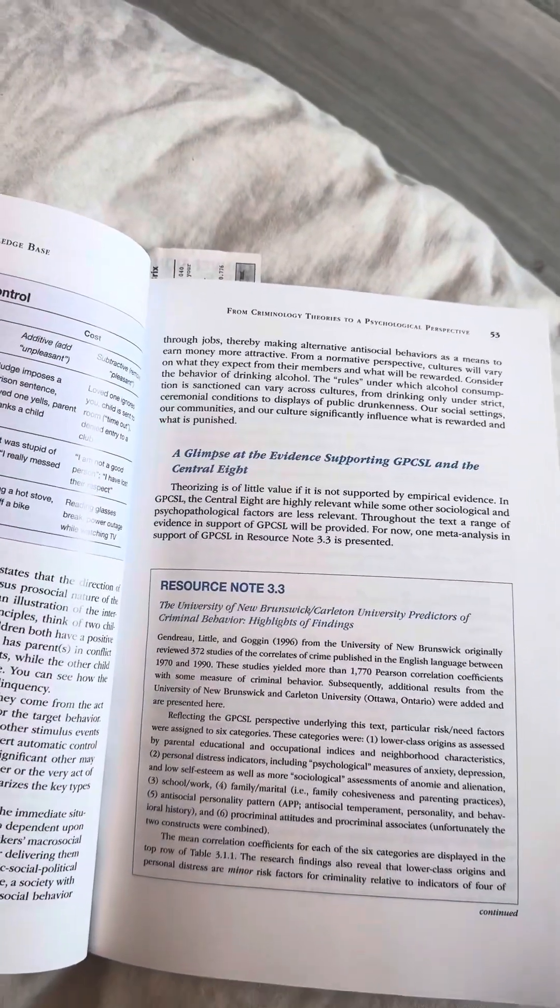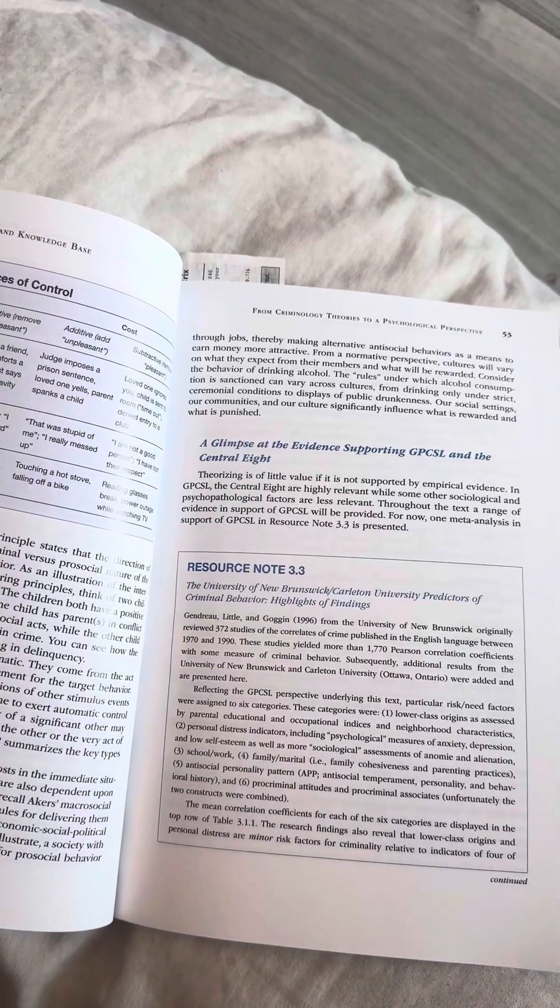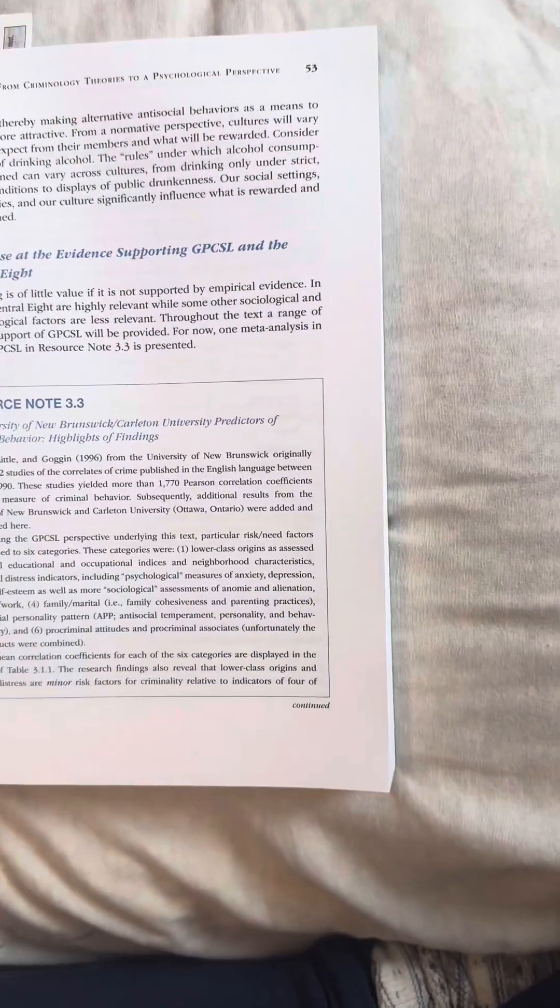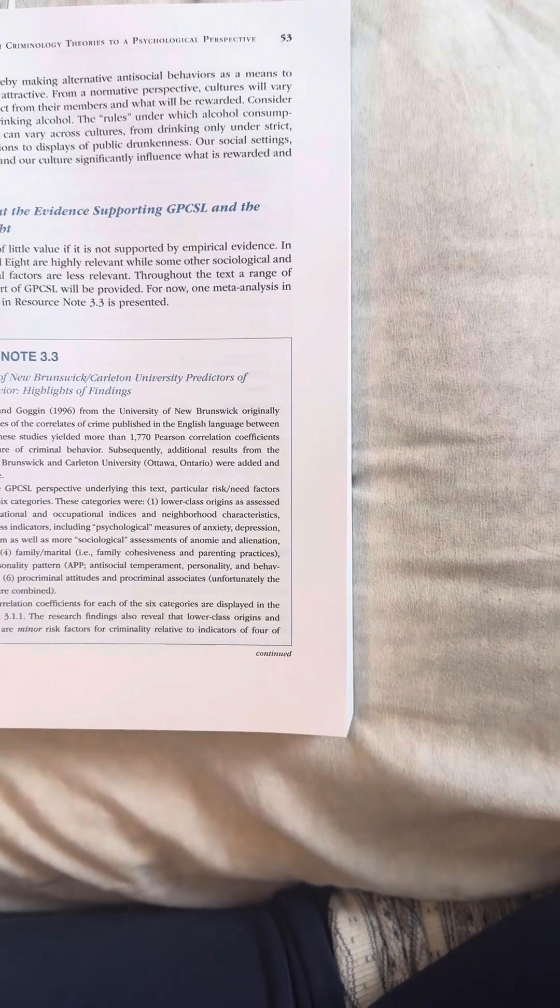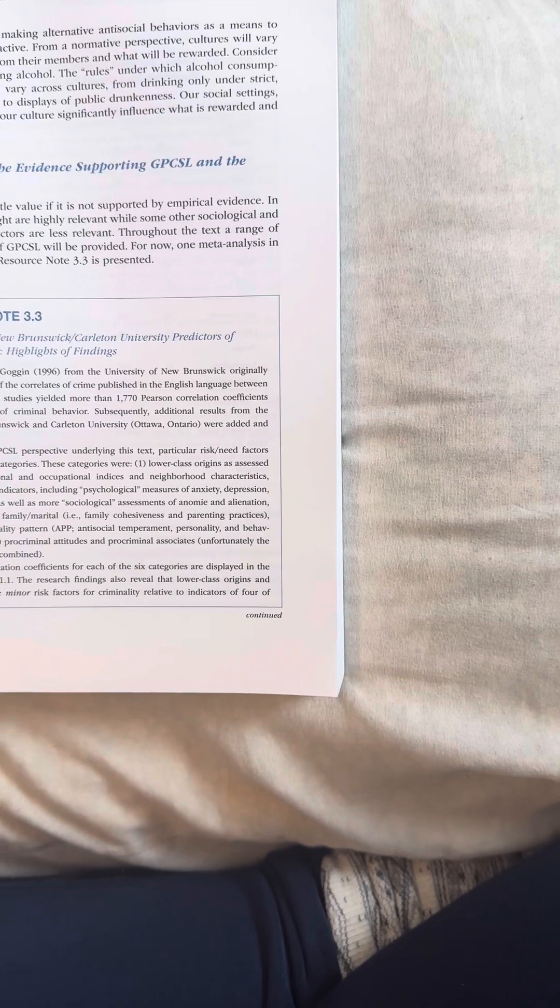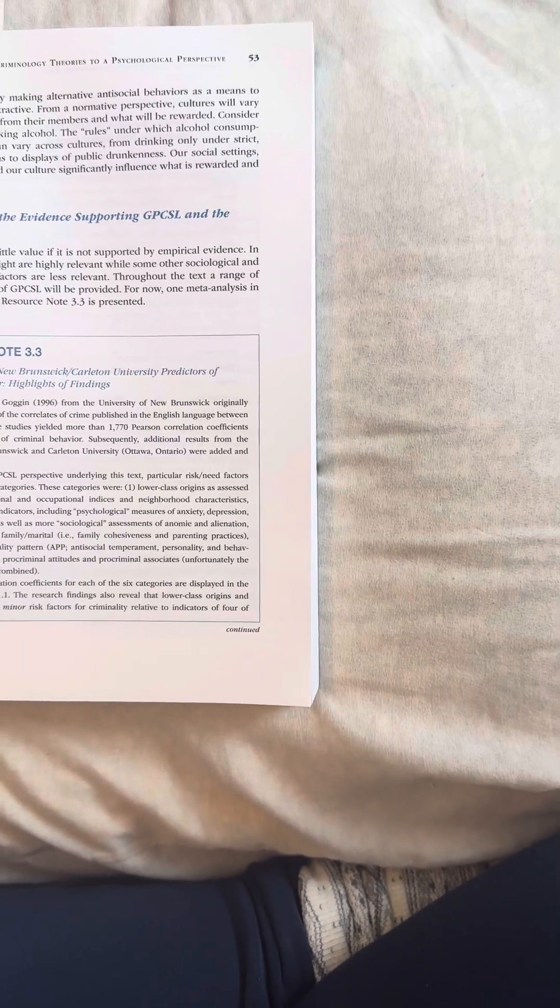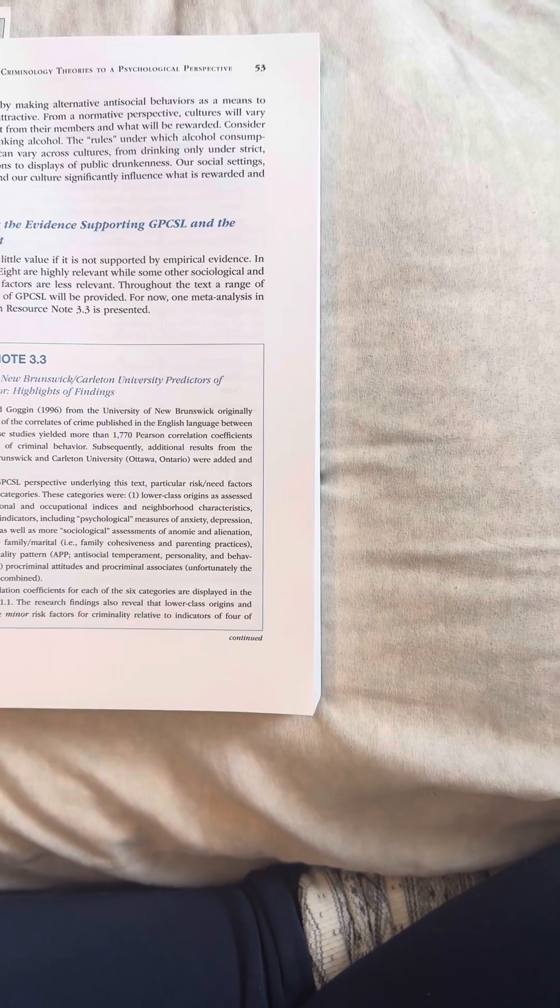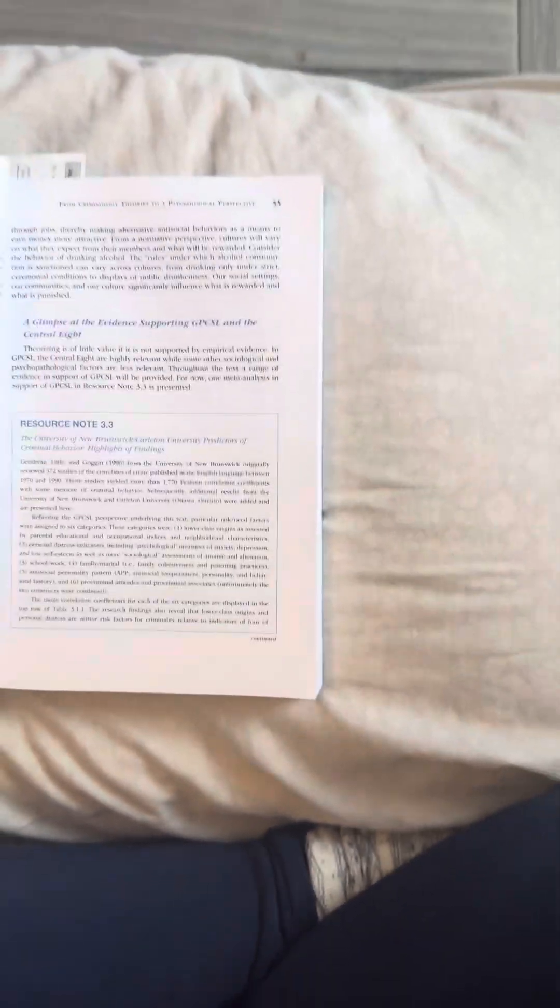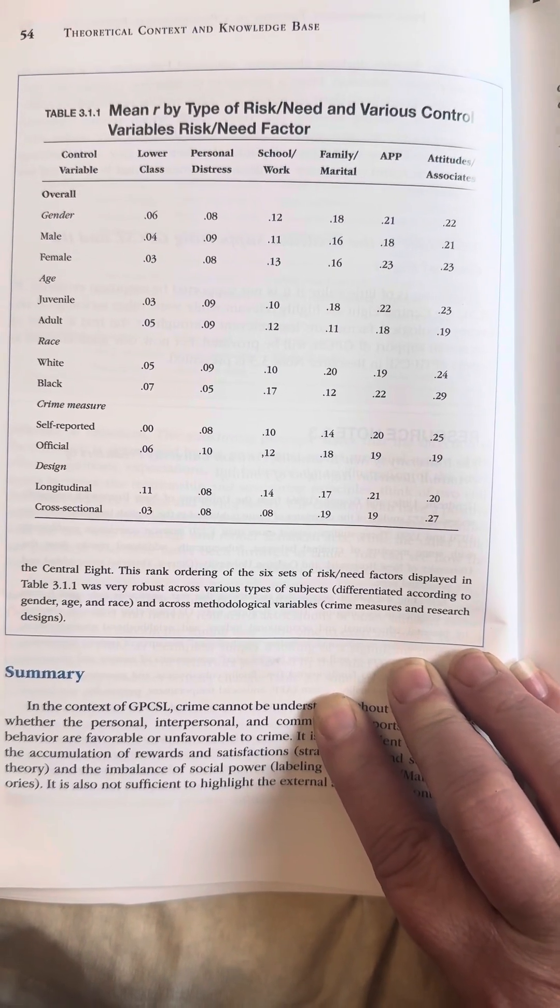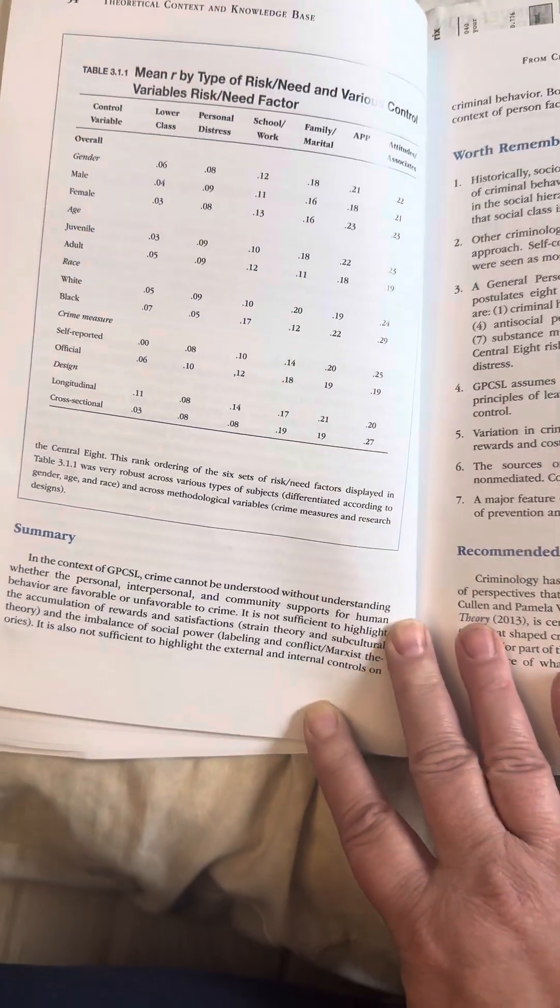A glimpse at the evidence supporting GPCSL and Central 8. Theorizing is of little value if it is not supported by empirical evidence. In GPCSL, the Central 8 are highly relevant, while some other sociological and psychopathological factors are less relevant. Throughout the text, a range of evidence in support of GPCSL will be provided. For now, one meta-analysis in support of GPCSL in resource note 3.3 is presented. Here is the resource note. Here is the graph. Mean R, type risk-need, and various control variables risk-need. In summary.